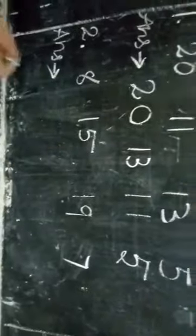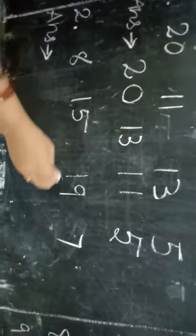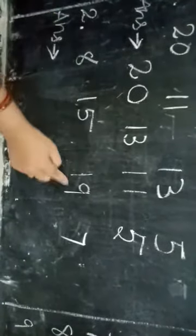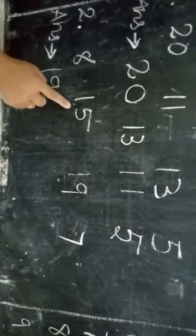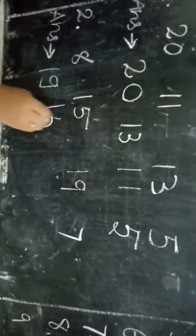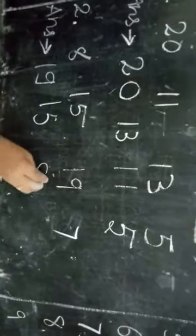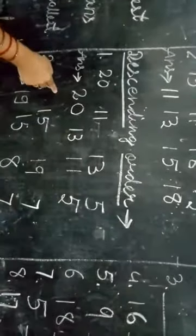The next, let us see another example. 8, 15, 19, 17. So which is the biggest number, students? 19. So we are writing here 19. The next is 17. And 8 and 15, which is the biggest? 15. And the last one is 8. So this is ascending or descending order.